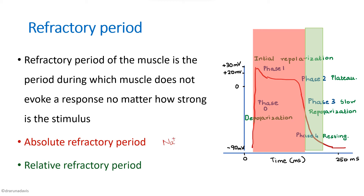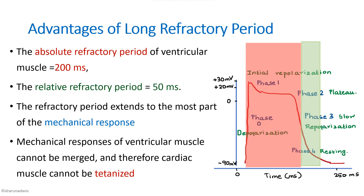In cardiac action potential, we must also remember the role of calcium channels. Because of the plateau phase, there is a very long absolute refractory period — it is due to both sodium and calcium channels. The relative refractory period is the period during which the sodium channels come out of their inactivated state, which is similar to skeletal muscle.